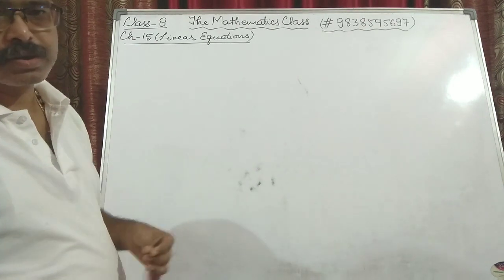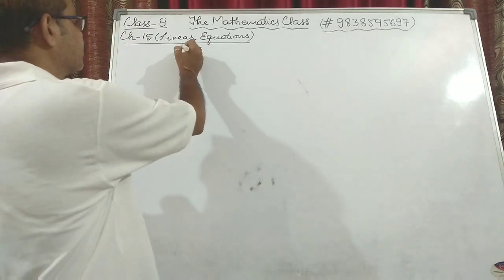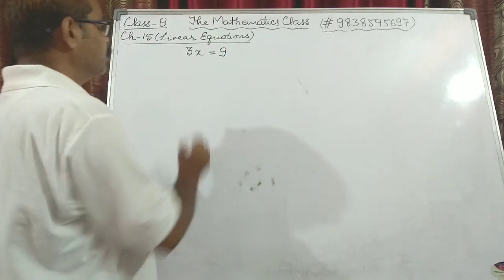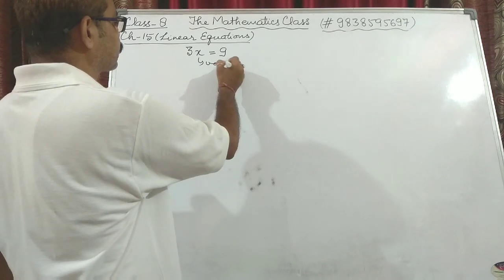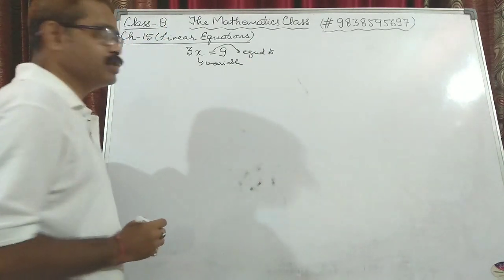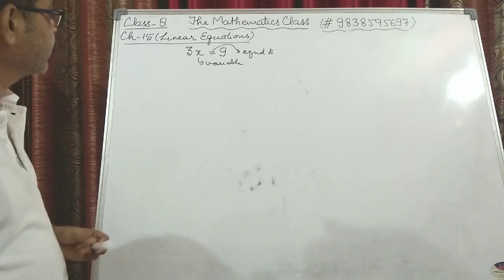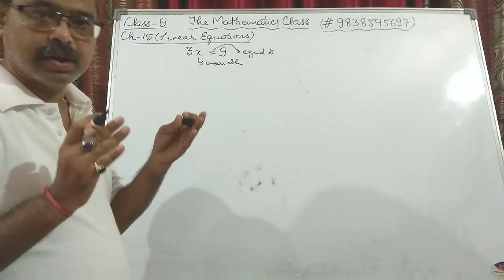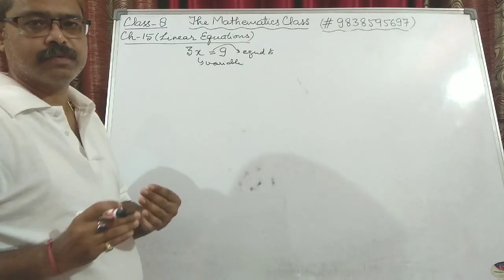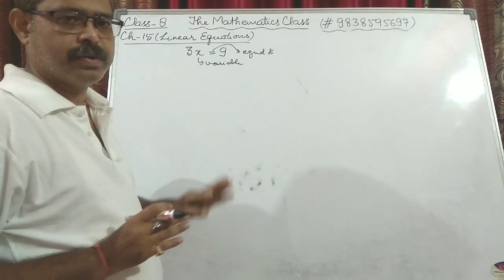Linear equation means we will be discussing linear equation in one variable. So what is a linear equation in one variable? Suppose I say 3x = 9. In this you can find only one variable, plus it is an equation because it has an equal-to sign. This is known as linear equation in one variable. To solve it, the concept is that all variables should be on one side of the equal-to and all numerals on the other side.